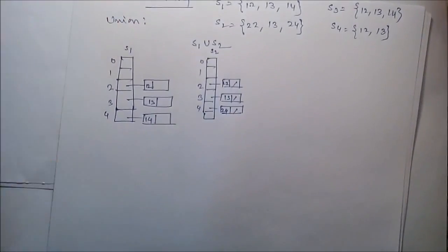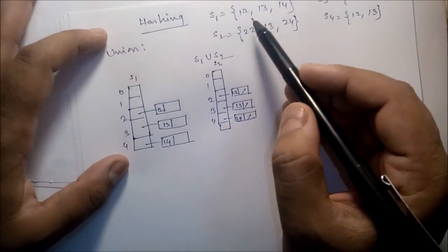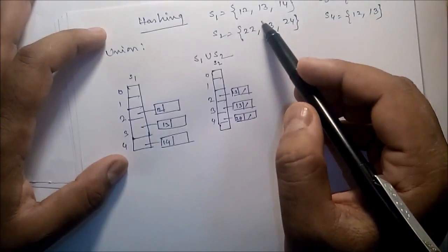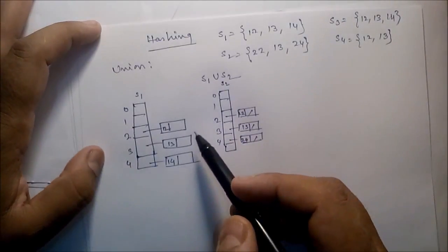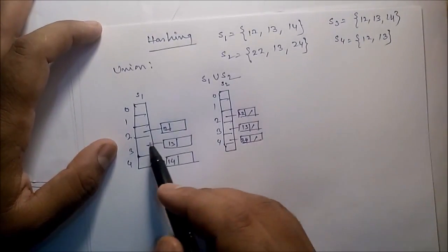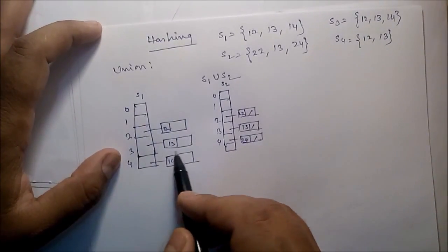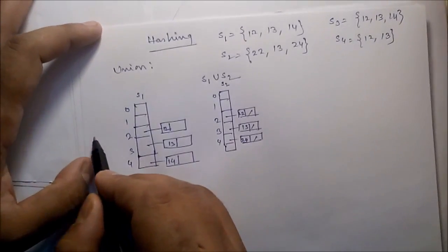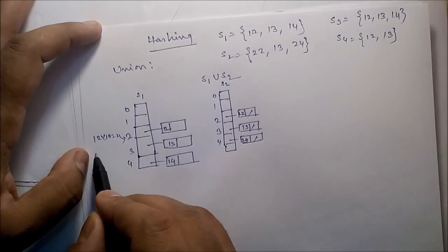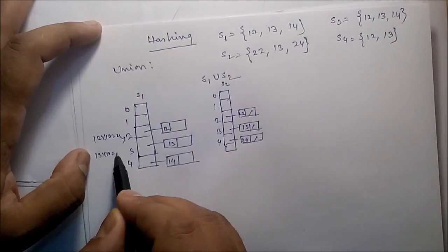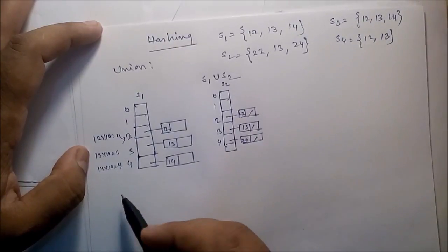In hashing, suppose we have sets S1 and S2 where the data are 12, 13, 14. So 12 modulo 10 — you can store here at index 2. 13 modulo 10 is 3, you can store here. 14 modulo 10 is 4, we can store here.